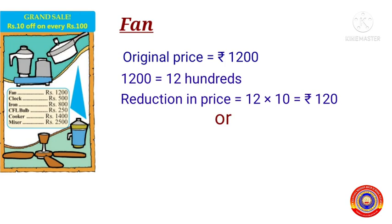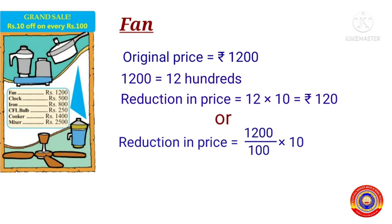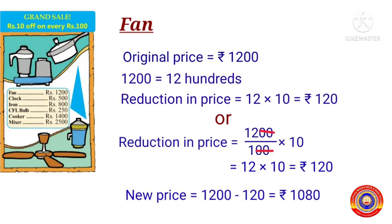Or we can find out the reduction in price by doing both operations together, that is: reduction in price = 1200 ÷ 100 × 10. Now cancel the two zeros from both the numerator and the denominator. After cancelling, we get 12 × 10 = 120 rupees. Therefore the new price of the fan is equal to 1200 minus 120, that is equal to 1080 rupees.